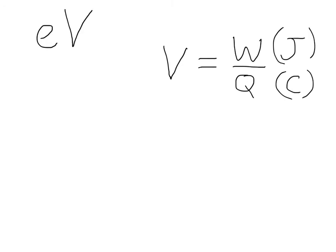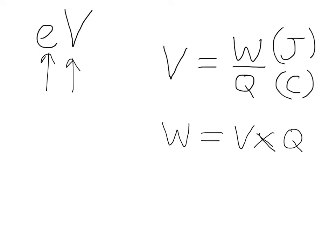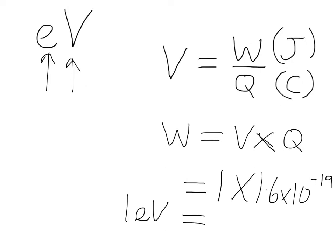To calculate work done, we rearrange to: work done equals volts times charge. An electron volt is defined as the work done on an electron when it's put through a potential difference of one volt. So one volt times the charge on an electron, 1.6 times 10 to the minus 19 coulombs (on the formula sheet), gives us that one electron volt equals 1.6 times 10 to the minus 19 joules.